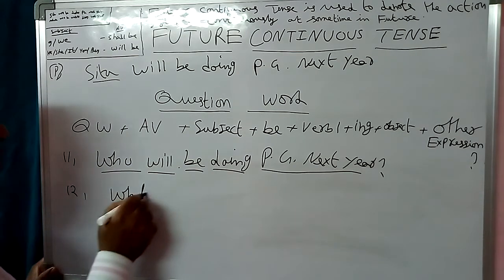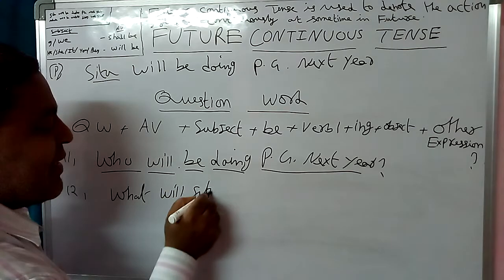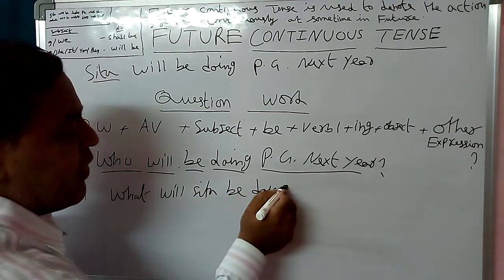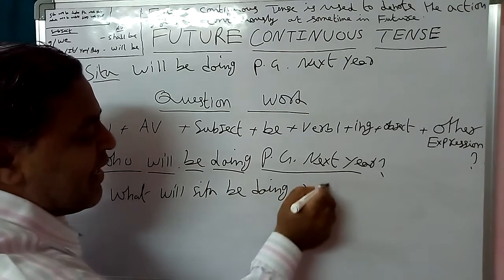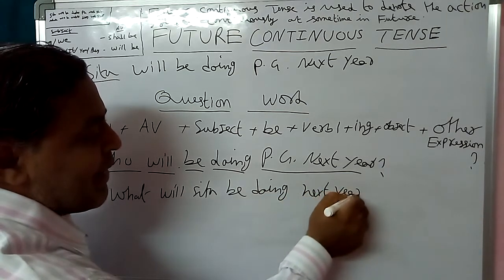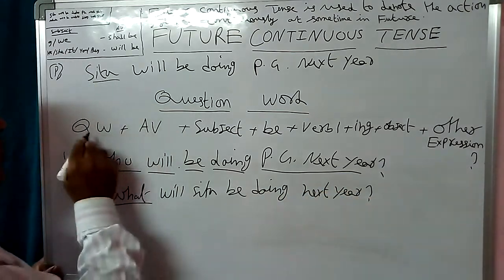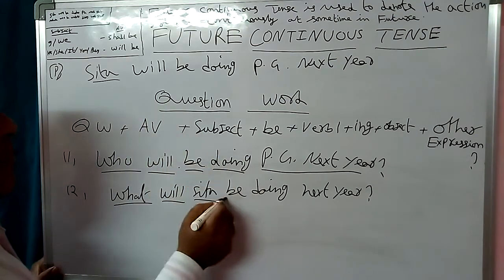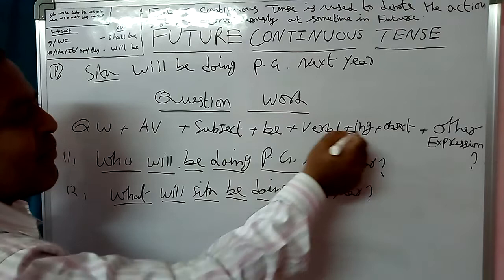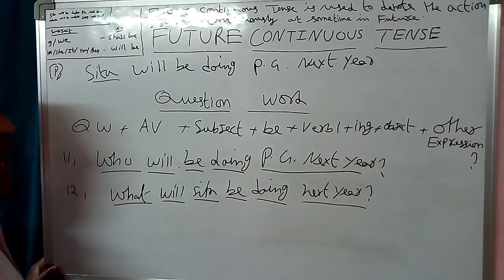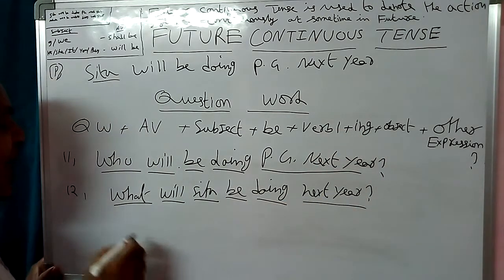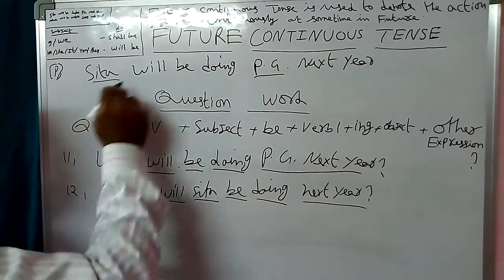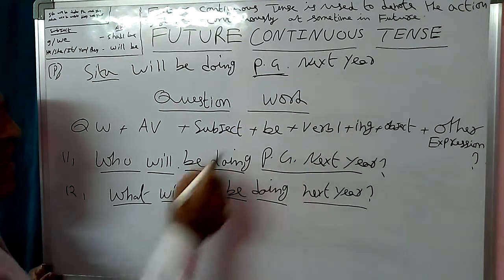What will Sita be doing next year? Structure: What (Question word) + Will (Auxiliary) + Sita (Subject) + Be + Doing (Verb 1 + -ing) + next year (Other Expression). Here the object is omitted because it is the answer. Answer: PG. Sita will be doing PG next year.